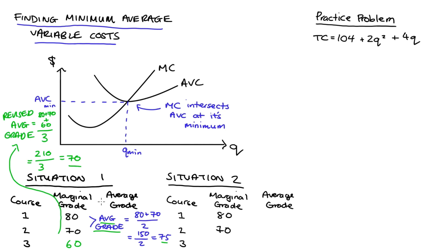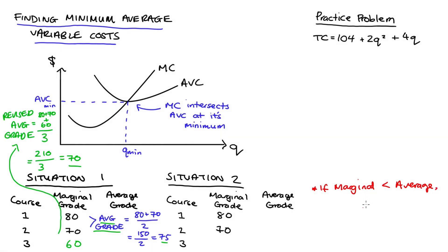This result can be generalized to all things marginal and average. If your marginal is less than the average of whatever thing you're measuring — it could be grades, weights, heights, costs — this is going to reduce or drag your average down. So your average decreases. The general result: if your marginal observation is less than your average, your average will decrease.